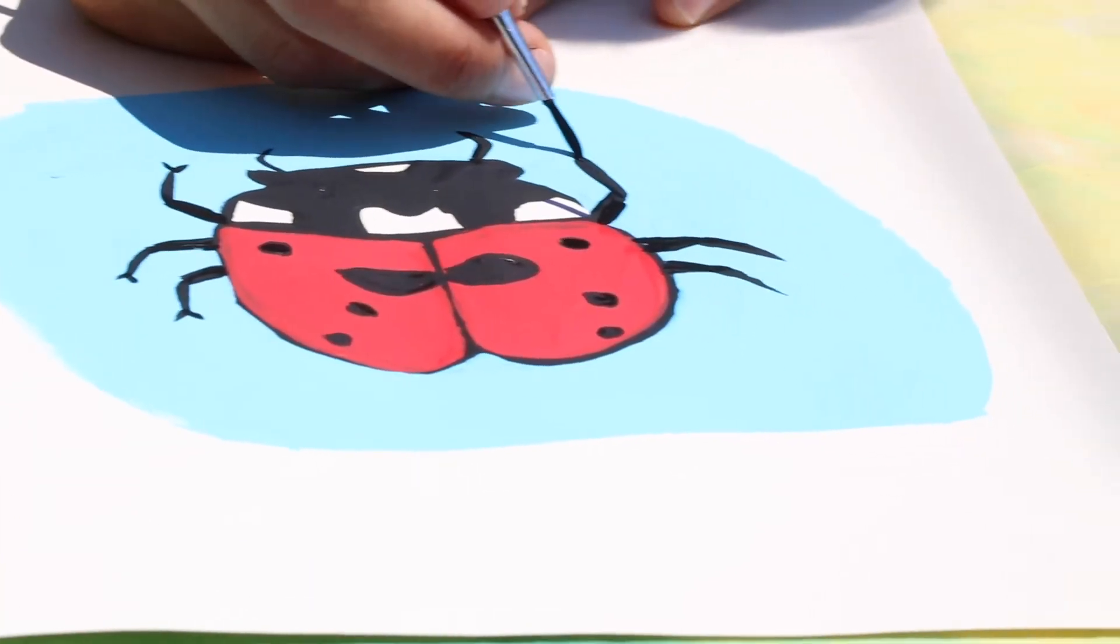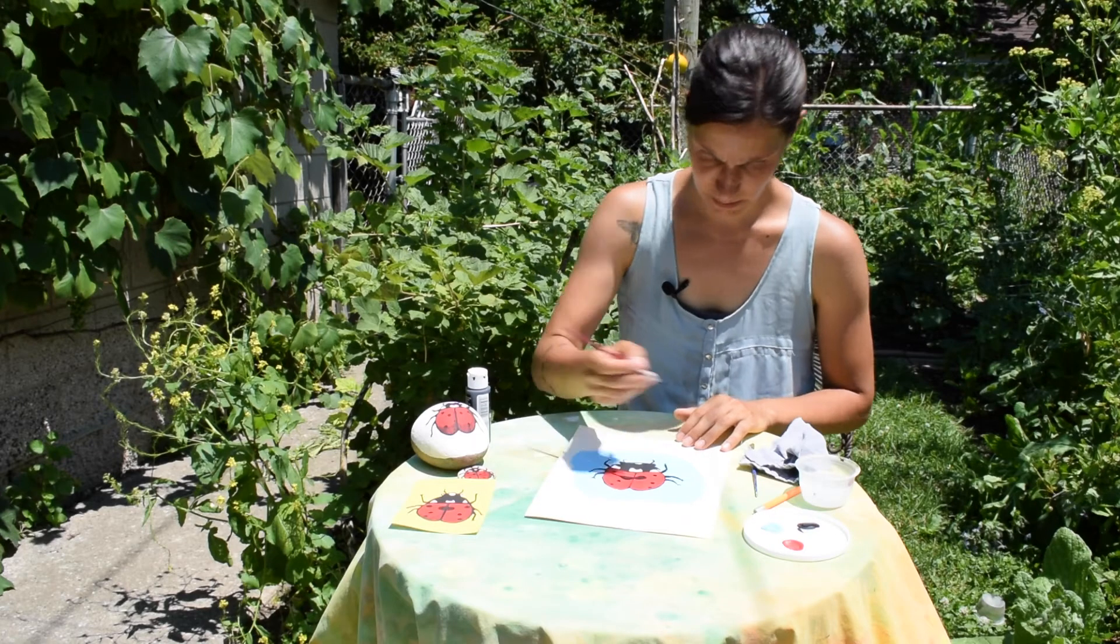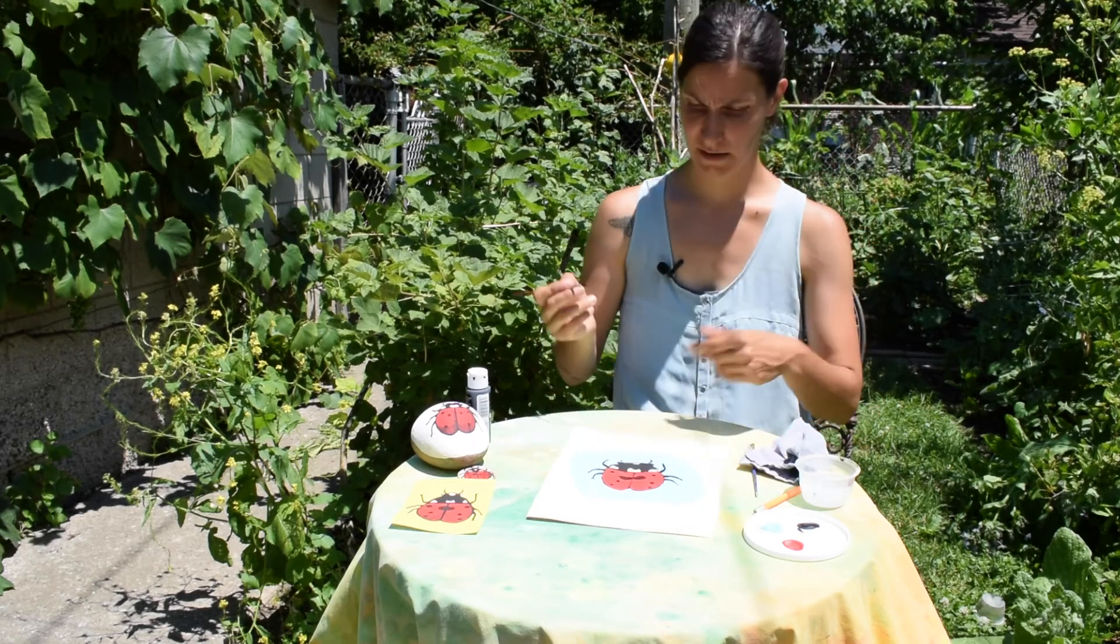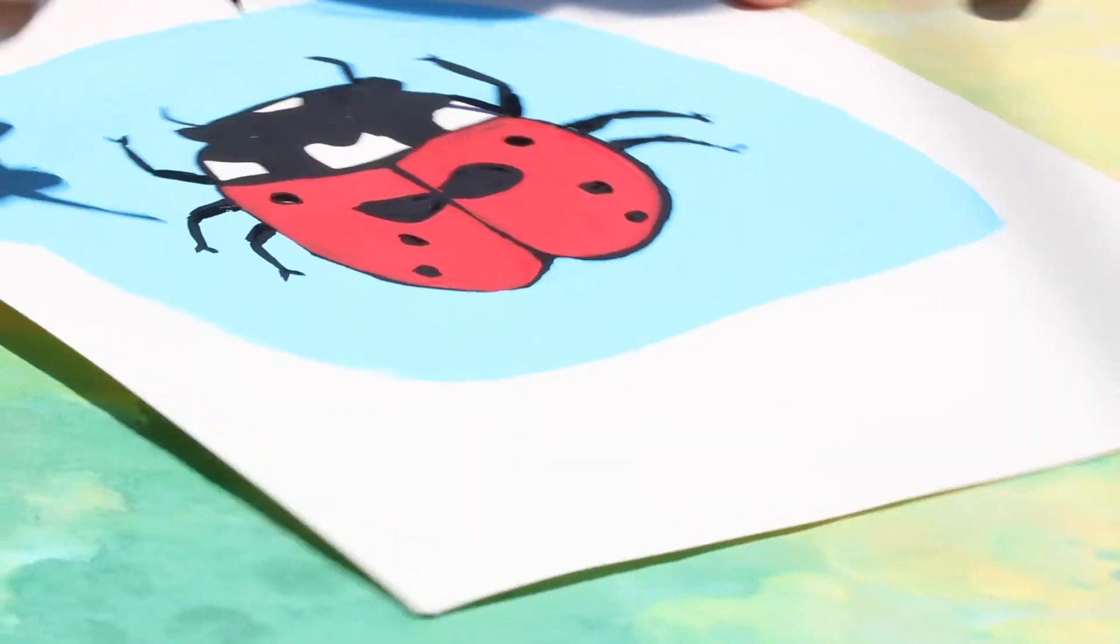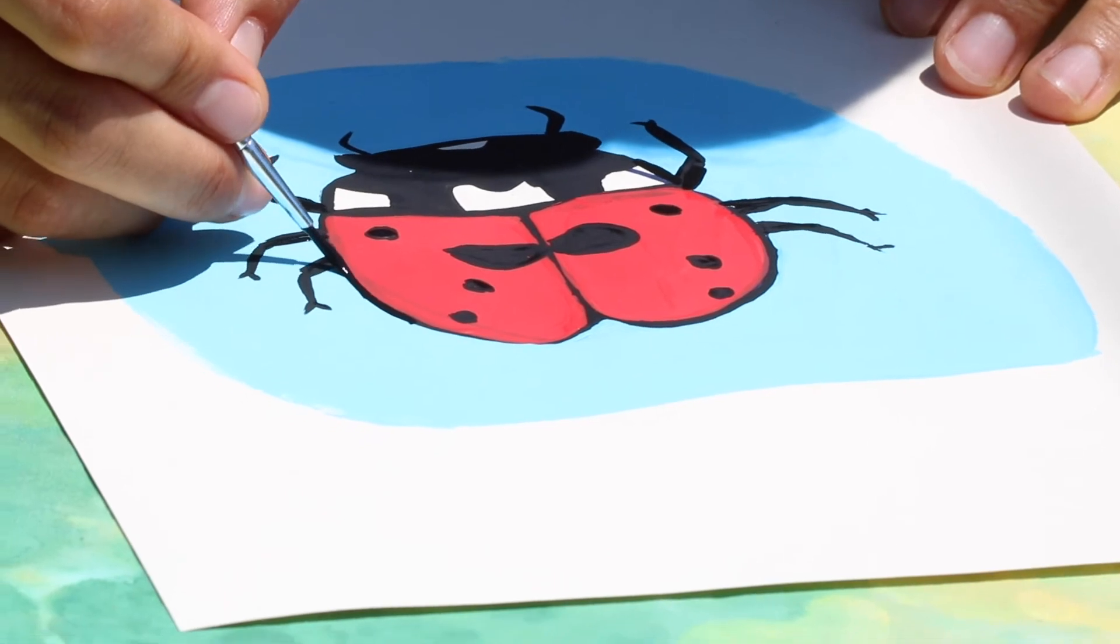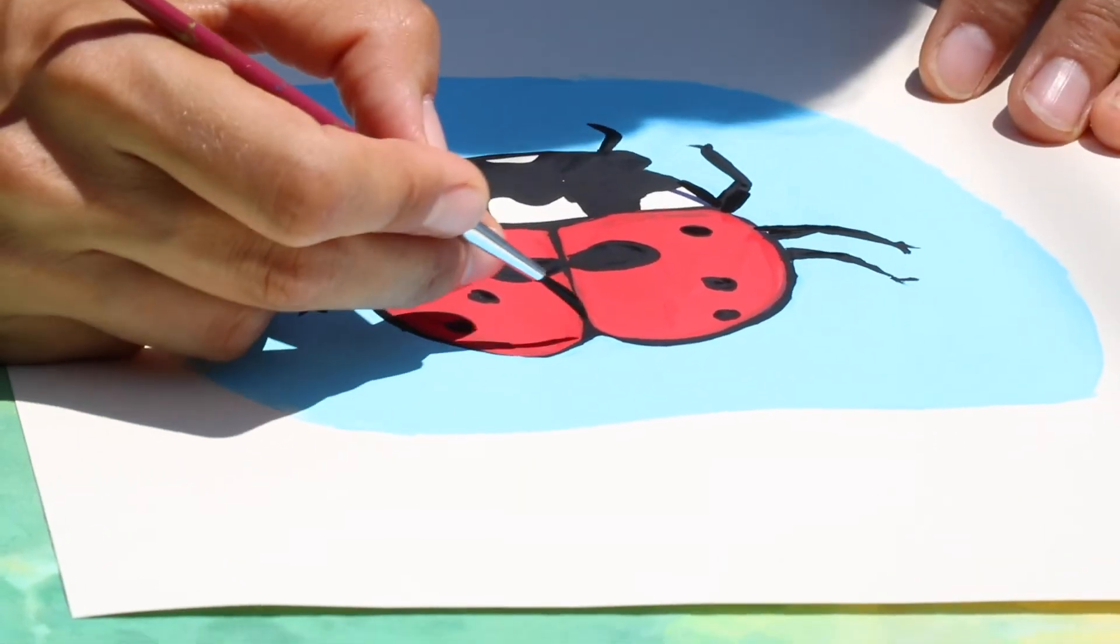You can add little claws to his feet. I just do a little V at the end of each of them. And I see some outline that I don't like the way it ended up, so I'm just going to go wherever I feel my outline should be a little bit thicker. I'm just going to touch it up.